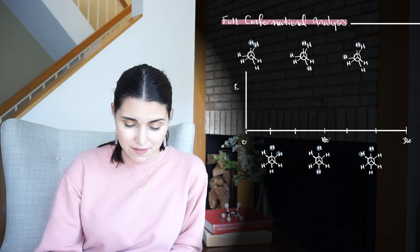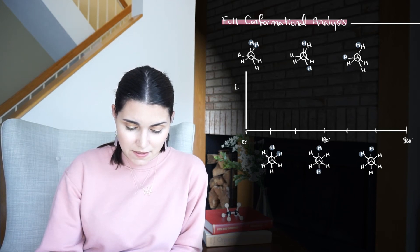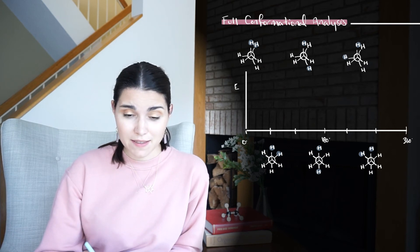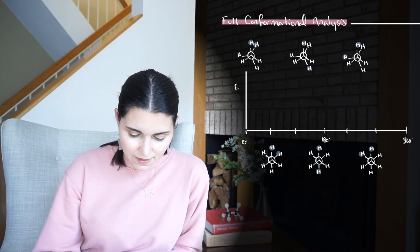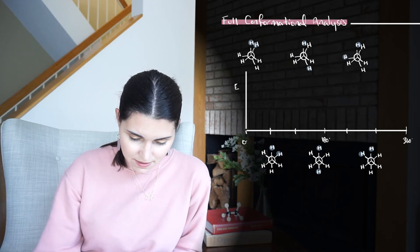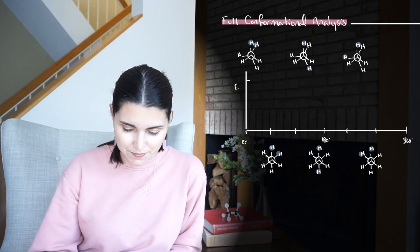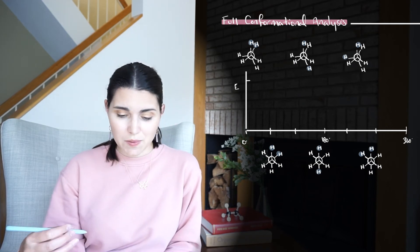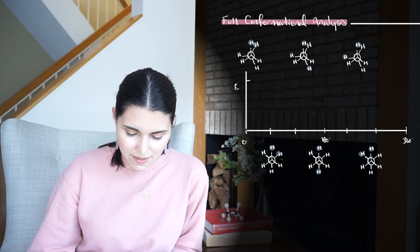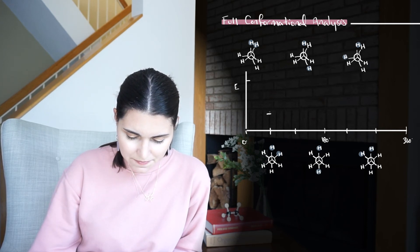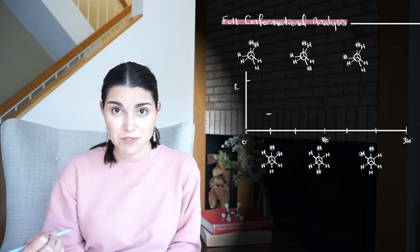So let's start here in this eclipsed conformation. The two hydrogens on top are the ones that we're going to look at, and I have them highlighted there in blue. And when they're zero degrees dihedral angle, we know that their energy is higher because of that torsional strain. So then if we rotate the back carbon 60 degrees, we get this staggered conformation, and we know that its energy drops because it doesn't have that torsional strain anymore.